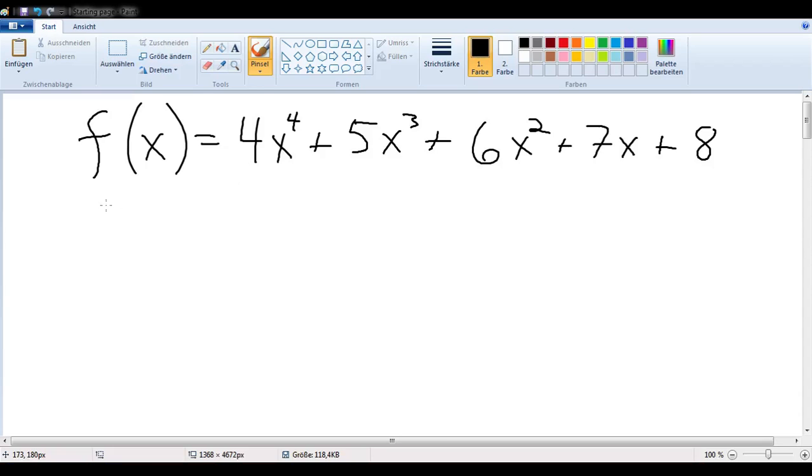What if I told you that there was a better way of computing a function value than the obvious way, being, in this case, 4 times 5 to the fourth plus 5 times 5 to the third plus 6 times 5 squared plus 7 times 5 plus 8? Would you believe me?